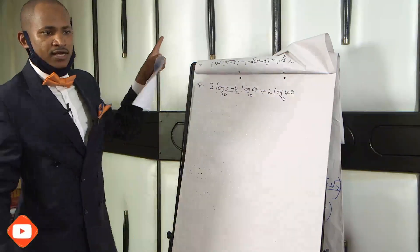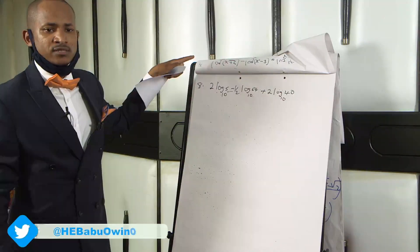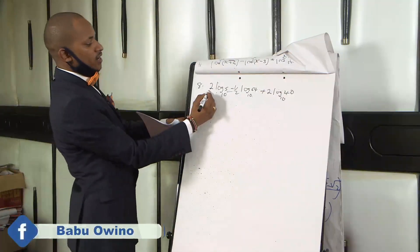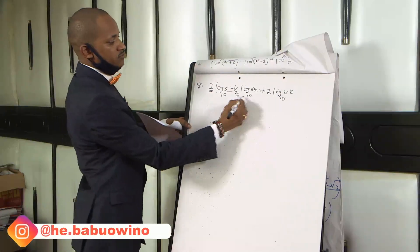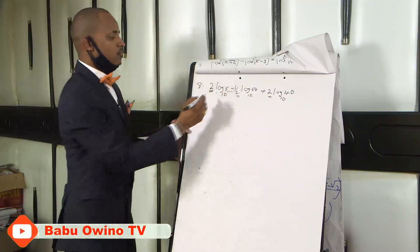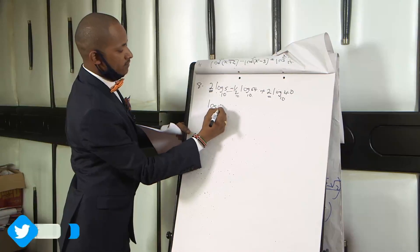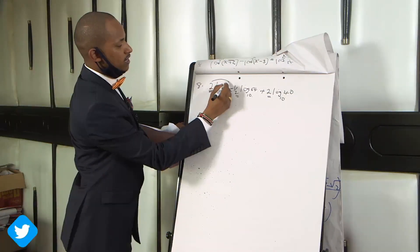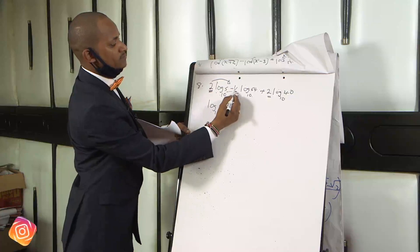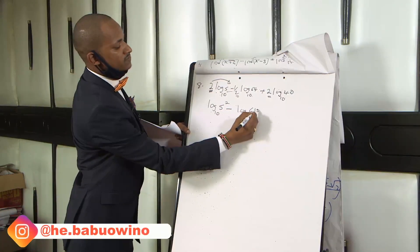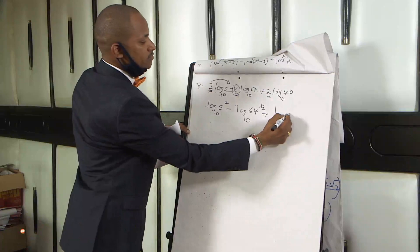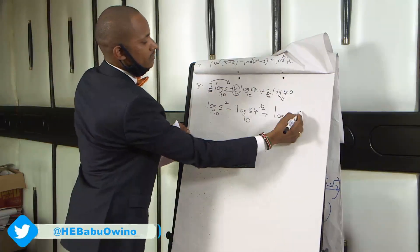This time around, the first thing to check is the bases. The first question had logs to base 8; now we are dealing with logs to base 10. Number 1: ensure that these coefficients — the constant values — are rewritten so they go back as powers. So 2 log 5 becomes log 5 squared to base 10. Minus becomes log 64 raised to power a half to base 10. Plus becomes log 40 to base 10 raised to power 2.